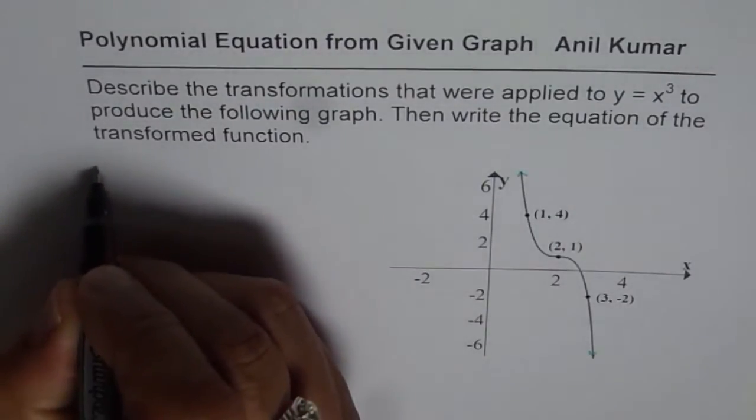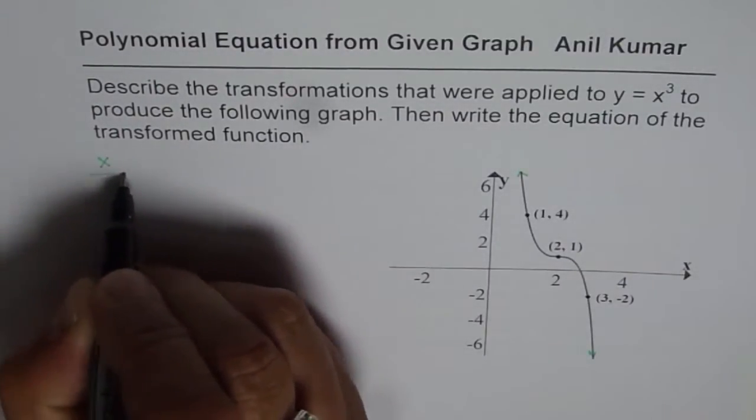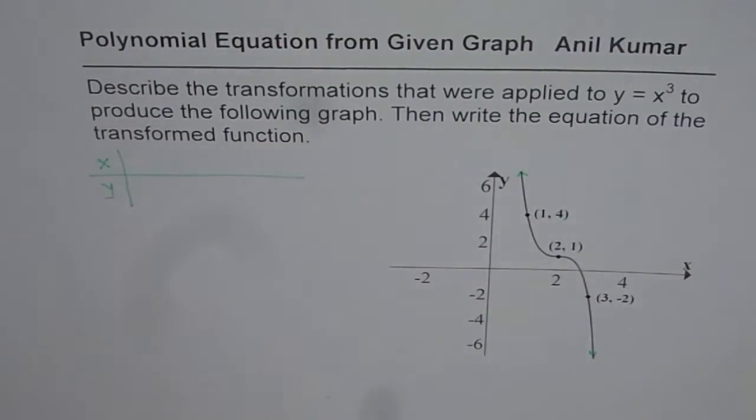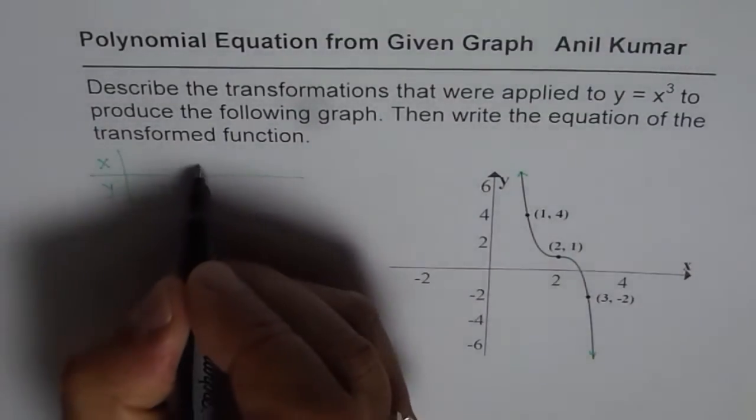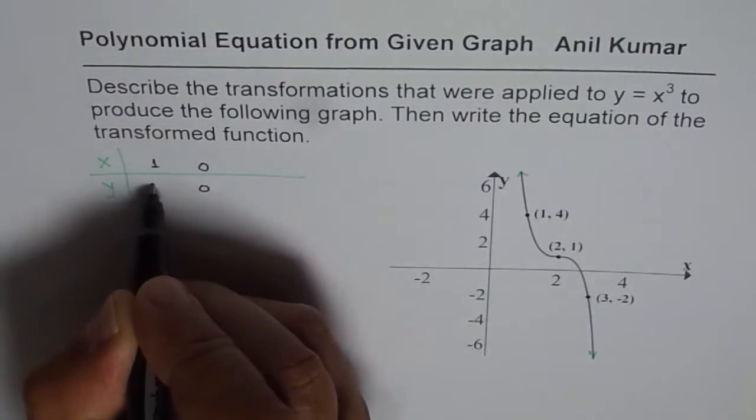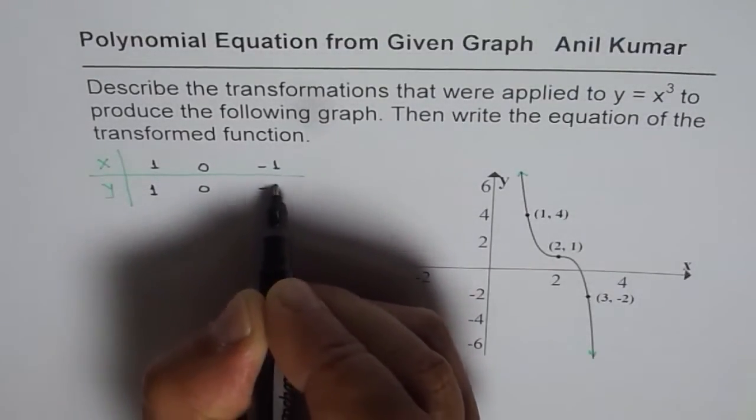y = x³. So that means if we give some values to x and find some values of y, key values are: for 0, y is 0; for 1, y is 1; and for -1, y is -1.